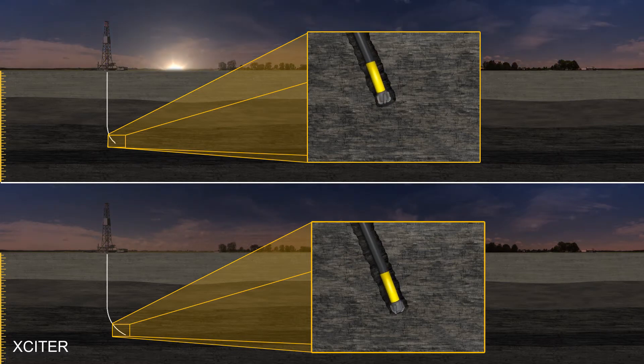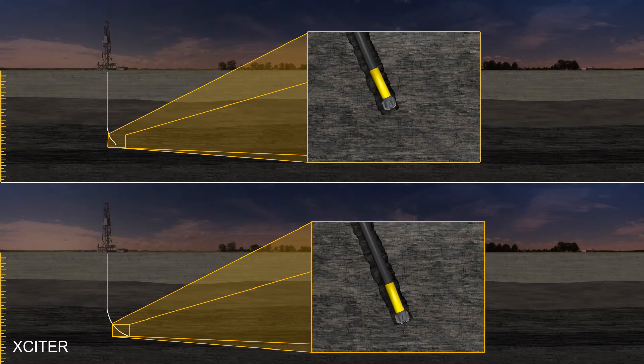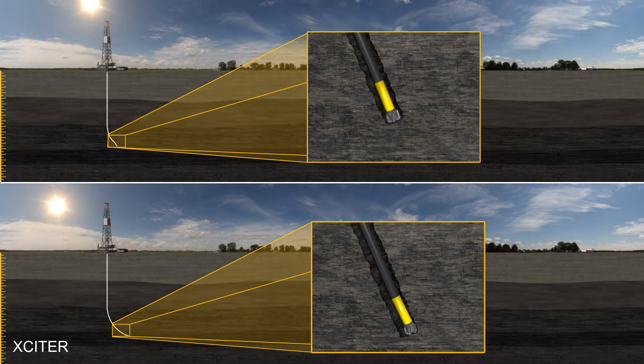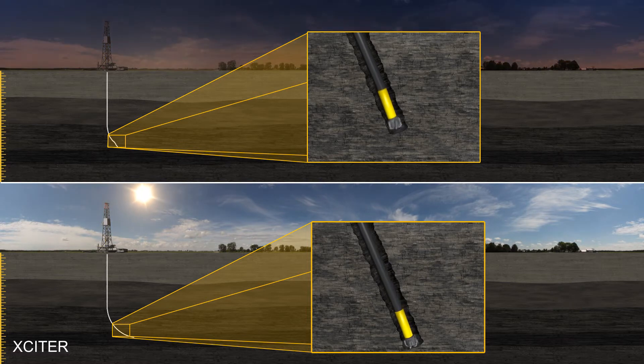Other vibration tools currently offered in the industry operate with high-intensity, low-frequency Z-axis pulse known to cause damage to MWD tools. The Exciter is truly an MWD, EM, and LWD-friendly tool.